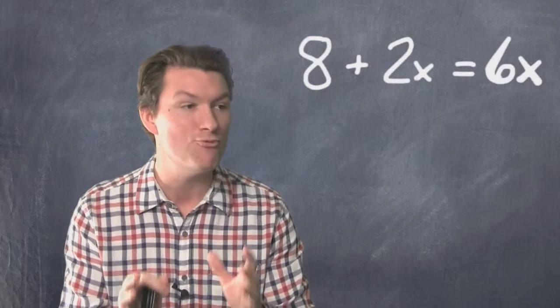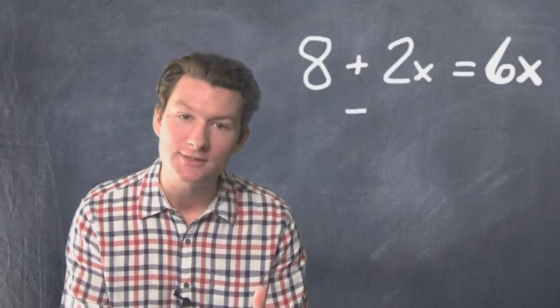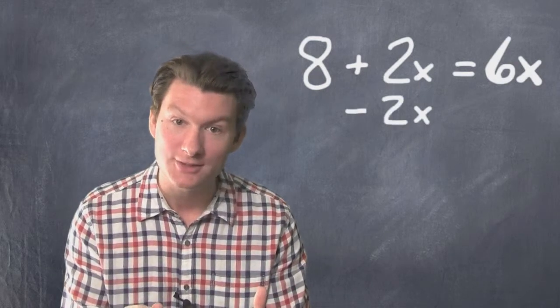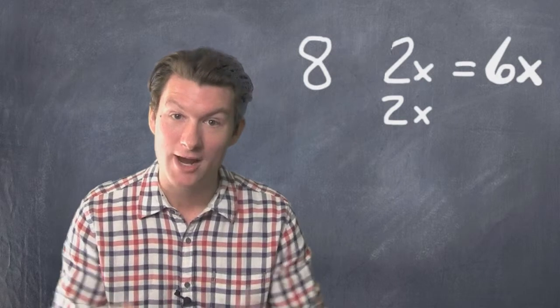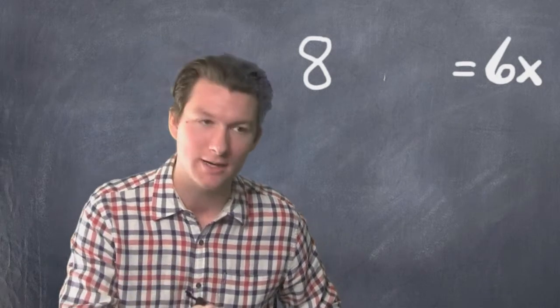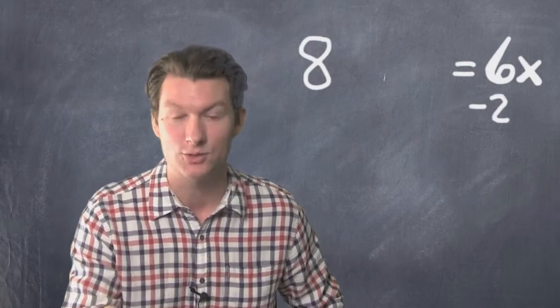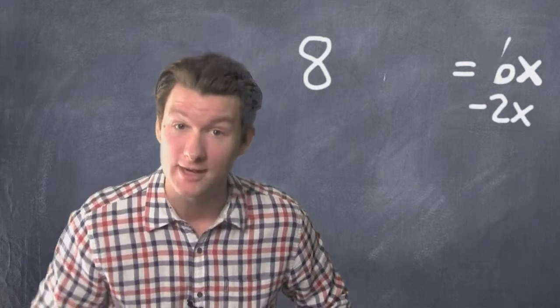So, how do we get rid of a plus 2x? Well, you do minus 2x. So, you subtract 2x on the left side. It gets rid of him, but whatever you do on one side of the equal sign, you got to do the same thing on the other. So, we subtract 2x on the right side of the equal sign.